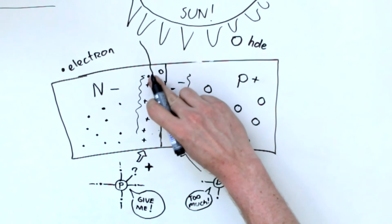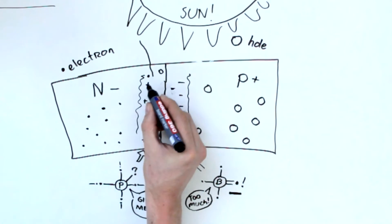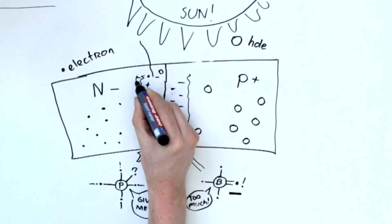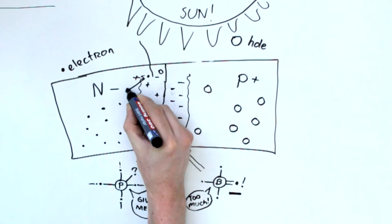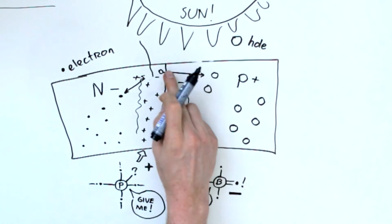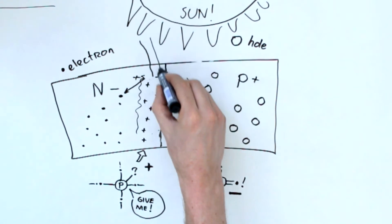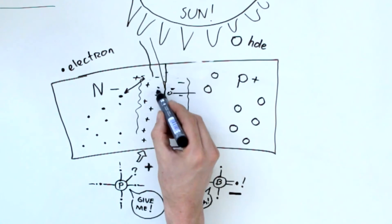Before this electron can get back into the hole, something interesting happens. The N-side of the depletion zone, which is full of phosphorus atoms, is positively charged. It attracts the electron. The P-side of the depletion zone, which is full of boron atoms, is negatively charged. This repels the electron. So there's an electric field.